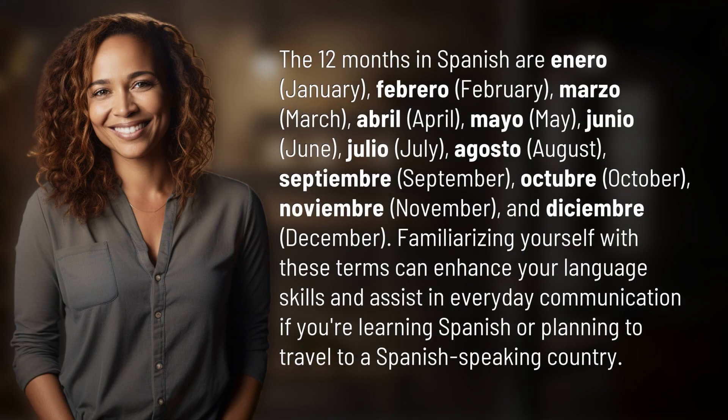The 12 months in Spanish are: enero, January; febrero, February; marzo, March; abril, April; mayo, May; junio, June; julio, July.